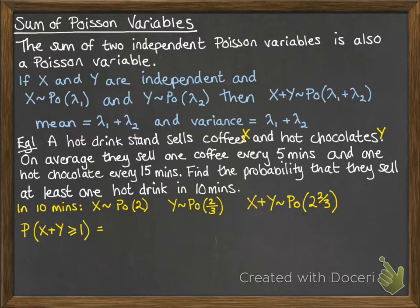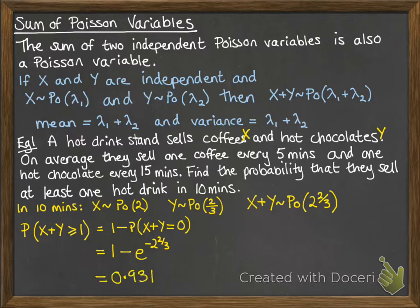The probability that x plus y is greater than or equal to 1 gives us the probability that they sell at least one hot drink — adding together the hot chocolates and the coffees, it has to be at least one. This equals 1 minus the probability that they sell no hot drinks at all, i.e., x plus y equals 0. Popping our formula in, we get a probability of 0.931, so it's very likely they will sell at least one hot drink within 10 minutes.